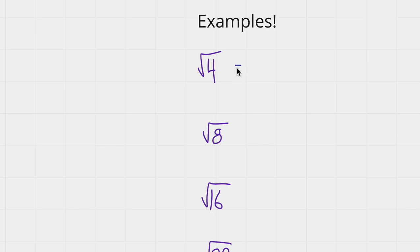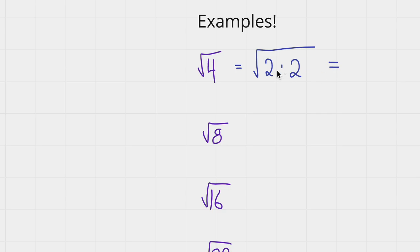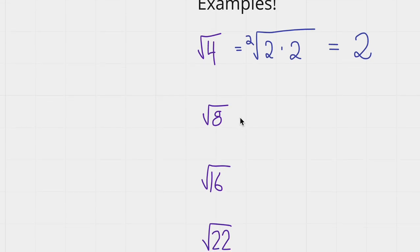So the square root of 4. The way we can find this is we have to use multiplication. Inside the radical sign, we have to come up with numbers that multiply together to equal 4. So 2 times 2 is equal to 4. Because this is a square root, anytime there are two of the same numbers inside the radical sign, they come right out. So the answer would be 2.